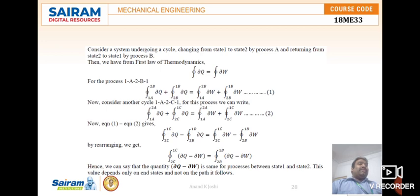This equals the cyclic integral from 2C to 1 of δW minus the cyclic integral from 2B to 1 of δW, which simplifies to δQ minus δW.